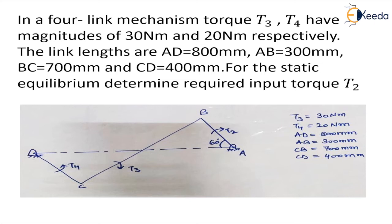In this question we are given torques T3 and T4, their magnitudes are also given and their directions are also given in the diagram. The length of the links AD, AB, BC, and CD is also given. We have already written all the given data and we have to find the unknown value torque T2 which is acting on link AB.